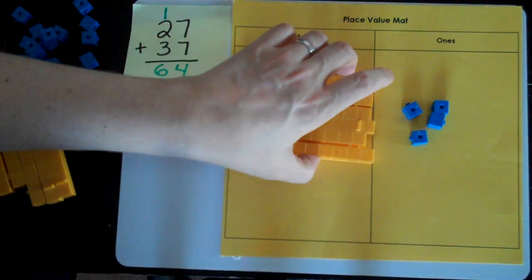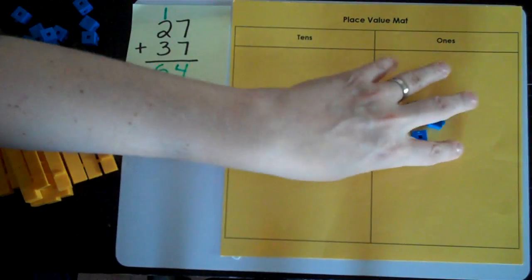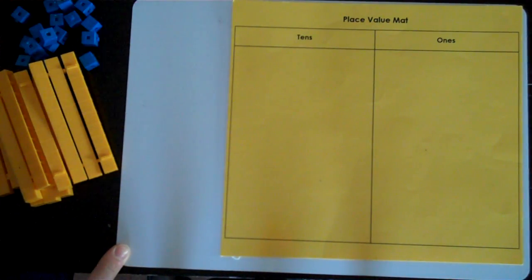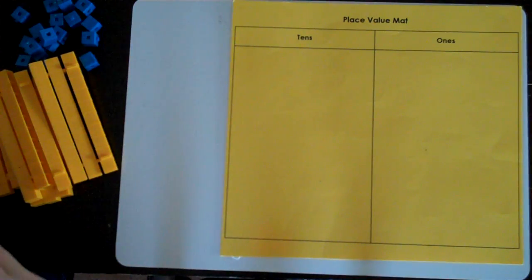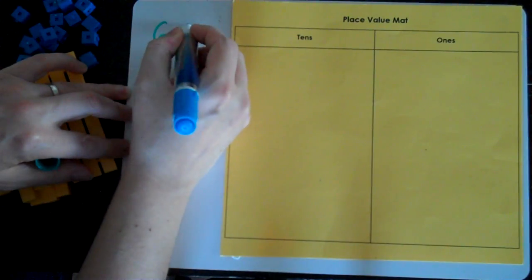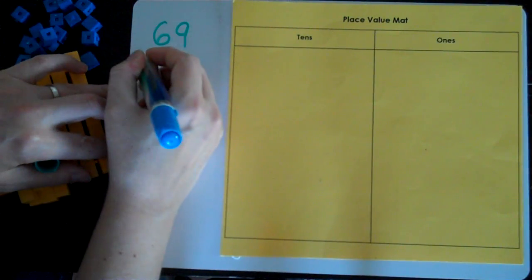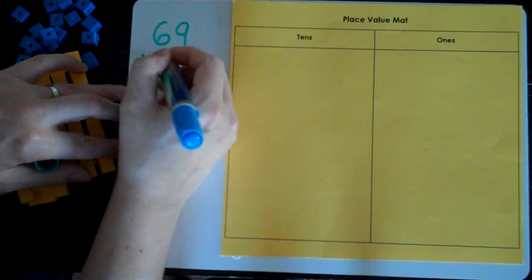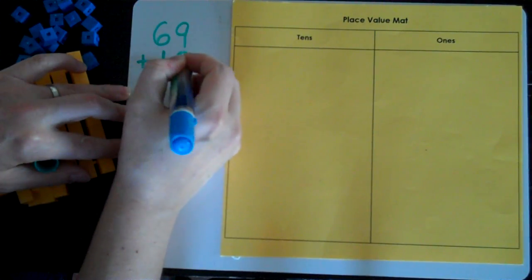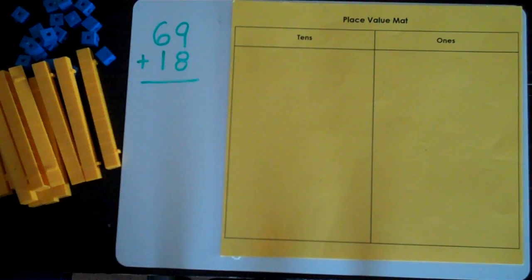So, what do I have to do first? Clear my place value mat. Are you ready to try some on your own? Alright, here's a question for you. What is 69 plus 18? Good luck!